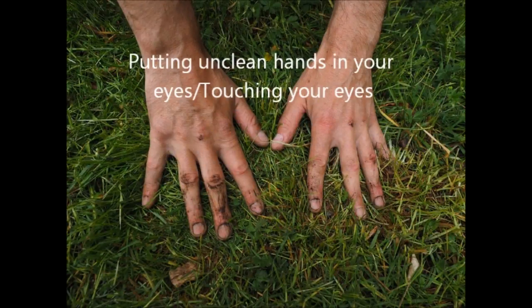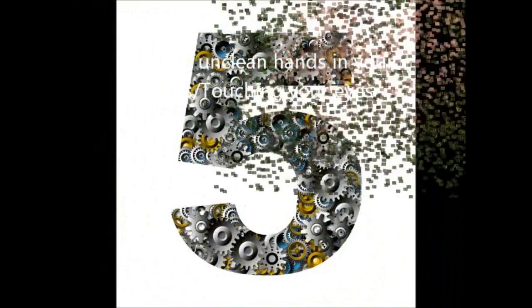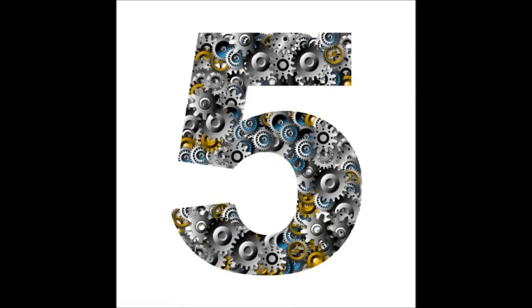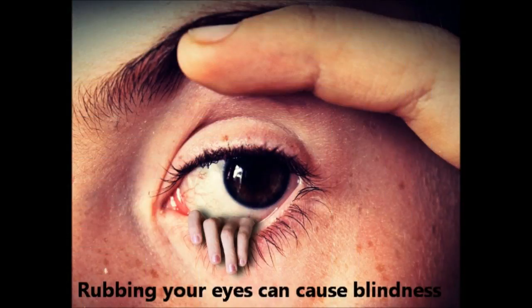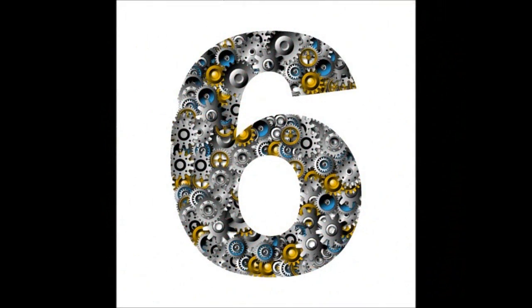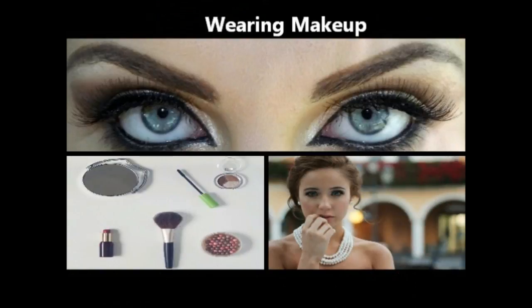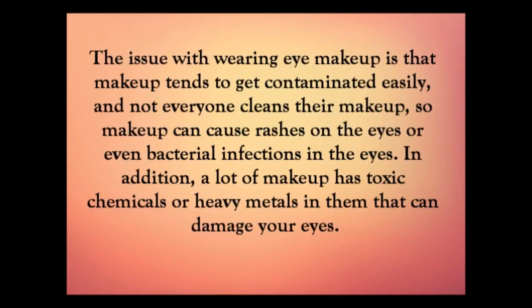Number six: wearing makeup. The issue with eye makeup is that it tends to get contaminated easily, and not everyone cleans their makeup regularly, which can cause rashes and even bacterial infections. In addition, a lot of makeup contains toxic chemicals or heavy metals that can damage our eyes. Heavy metals found in makeup include arsenic, lead, nickel, aluminum, chromium, cadmium, manganese, and mercury. Eyeliner often contains cadmium. Beryllium is often found in eye shadows, and mascara commonly contains arsenic.